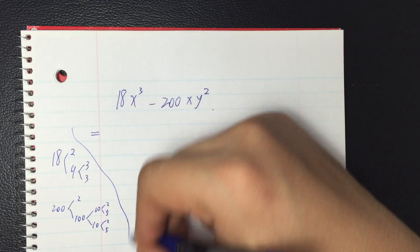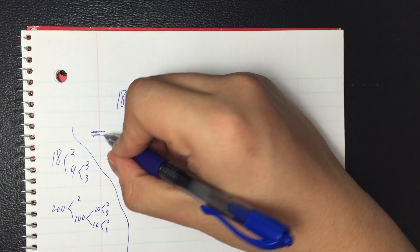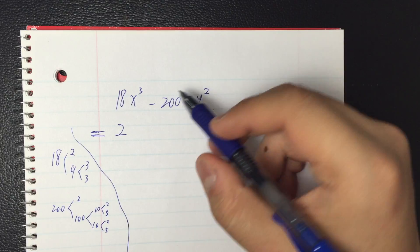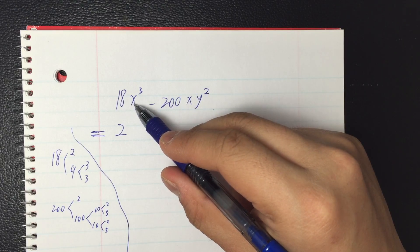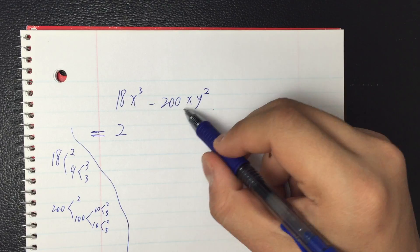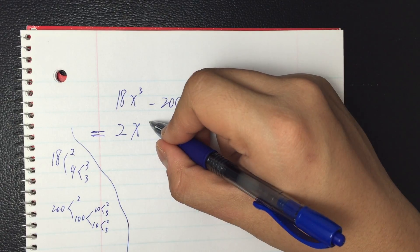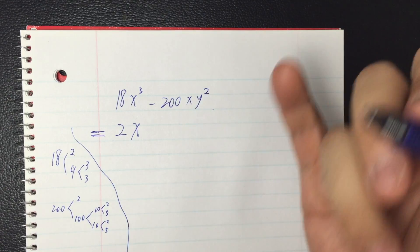So the only common factor I got here was 2 for numbers. For the variable, I have x to the third and x, I could take the x out. Y squared only, I'll leave it.